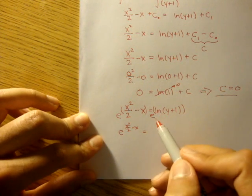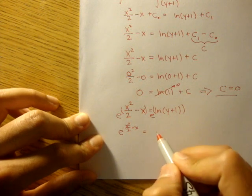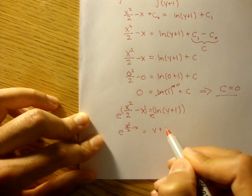And we'll get e to the x squared over 2 minus x is equal to, well, e and ln, they obliterate each other. So we'll just get y plus 1.